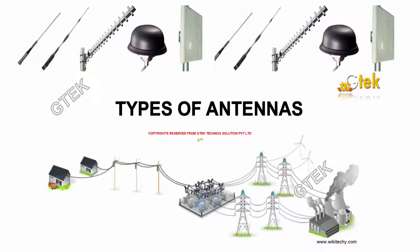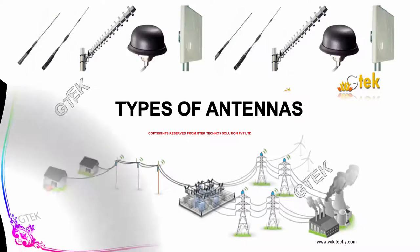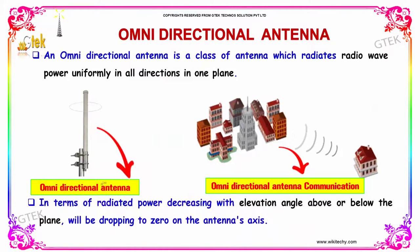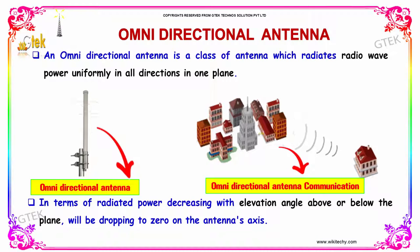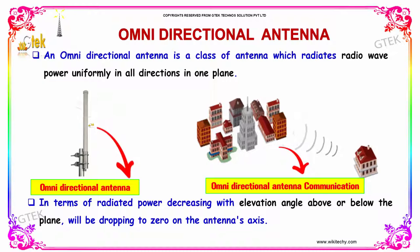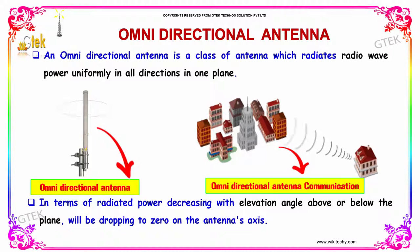Let's move on to the types of antennas. An omnidirectional antenna is a class of antenna which radiates radio wave power uniformly in all directions in one plane. As you can see here, radiated power decreases with elevation angle above or below the plane, dropping to zero on the antenna's axis.